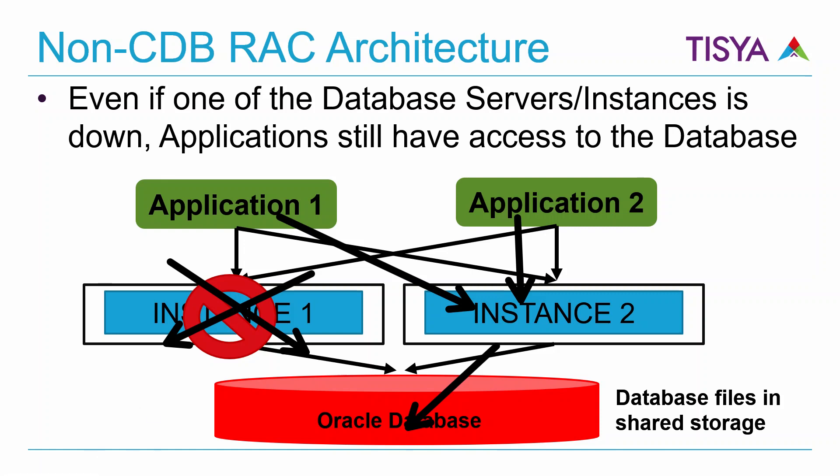This is why we use RAC — with respect to the non-CDB architecture, because we have a single database there. Having understood all of this, it is finally time to get into the multi-tenant architecture. The remaining videos in the playlist will be specifically looking at the multi-tenant architecture.